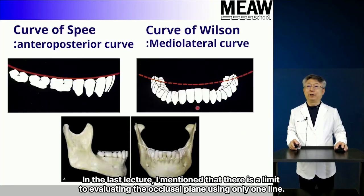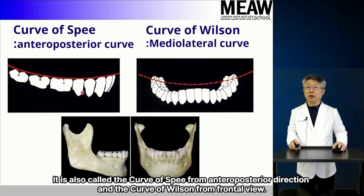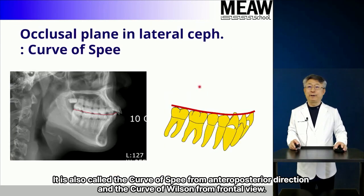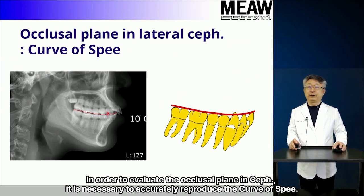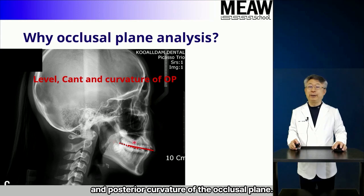In the last lecture, I mentioned that there is a limit to evaluating the occlusal plane using only one line. The occlusal plane is also called the curve of Spee from the anteroposterior direction and the curve of Wilson from the frontal view. In order to evaluate the occlusal plane in CEPH, it is necessary to accurately reproduce the curve of Spee. Occlusal plane analysis is obtained by accurately measuring the vertical height, inclination, and posterior curvature of the occlusal plane.